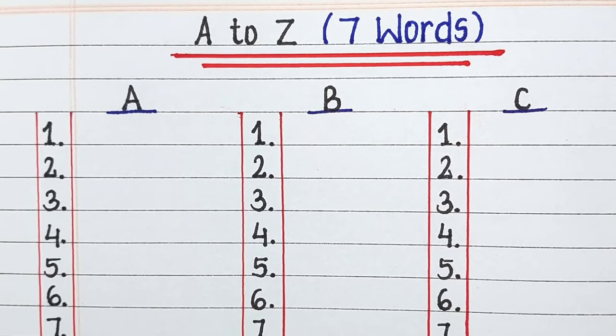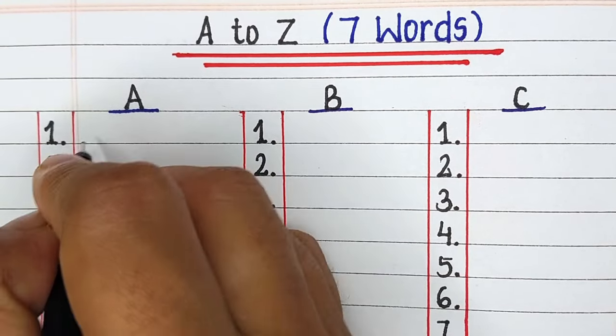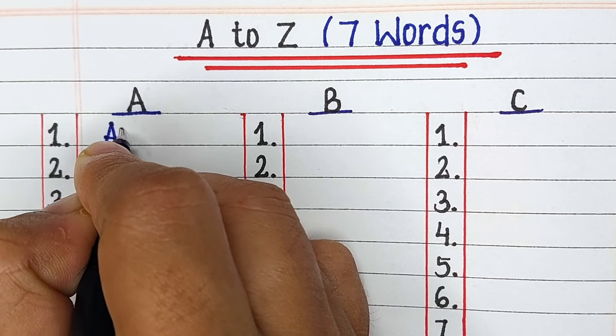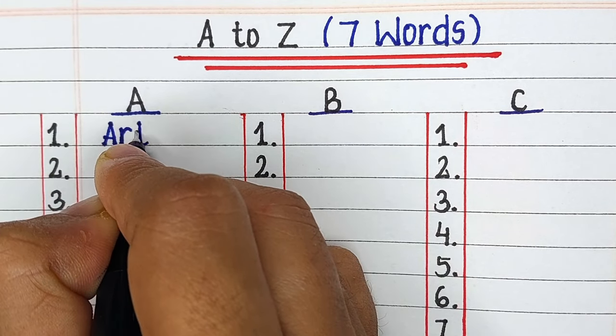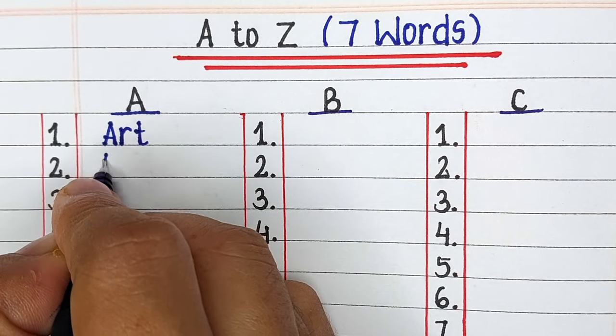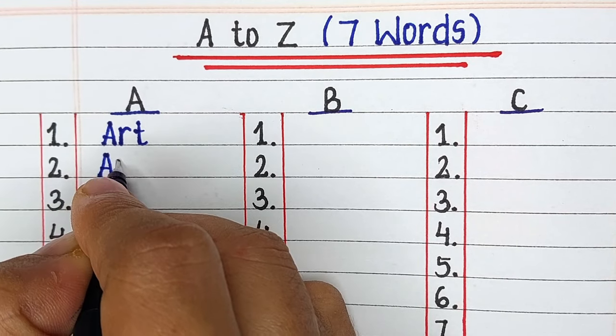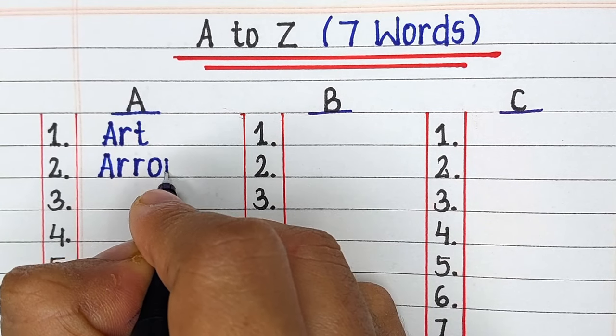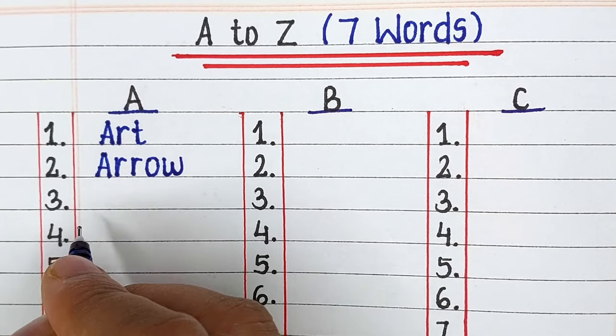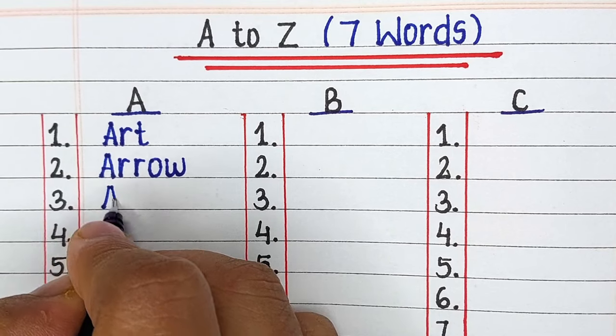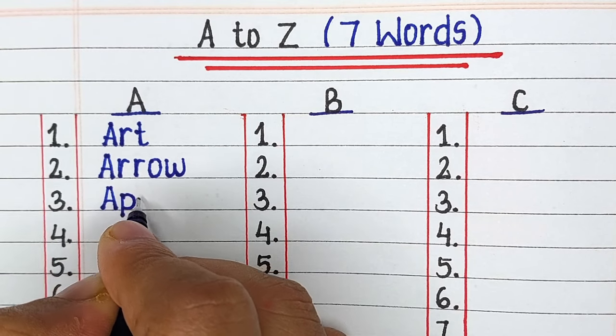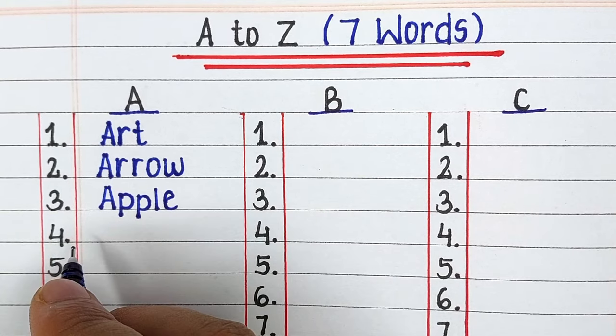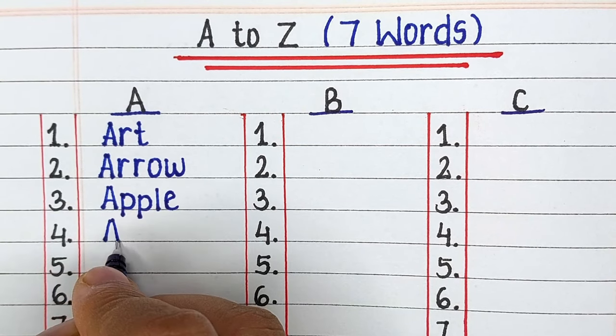Hello viewers, welcome to our channel Try to Learn. In this video, we will learn words starting from alphabets A to Z, 7 words each. If you find this video helpful, please hit the like button and for more such videos, consider subscribing to our channel Try to Learn.